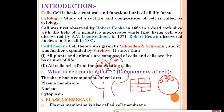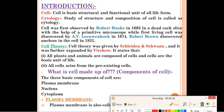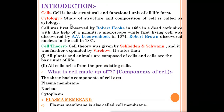Without a cell, a living organism cannot be formed. Just as bricks are for a building and atoms are for matter, cell is for living organisms. Every living organism is made up of cells. Cell is the basic structural and functional unit of all living organisms — it provides structure and carries out various functions like respiration, nutrition, and cell division.